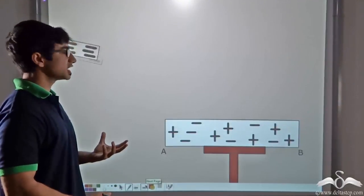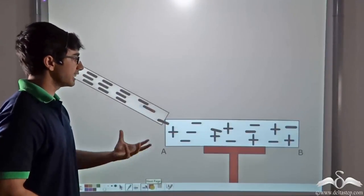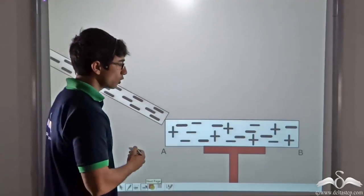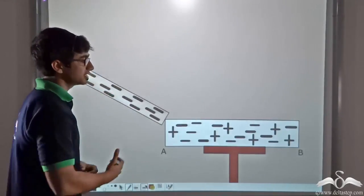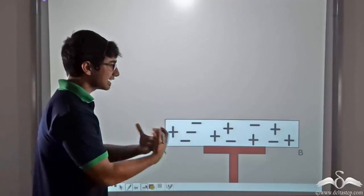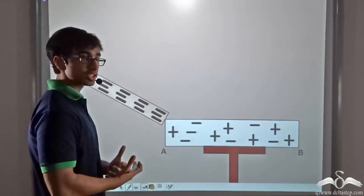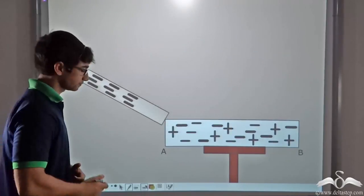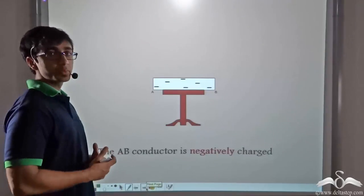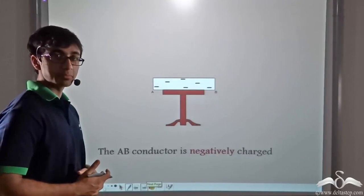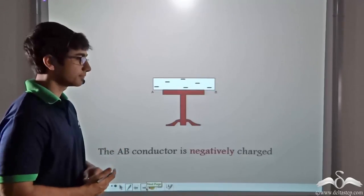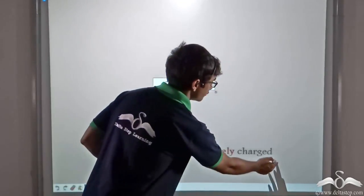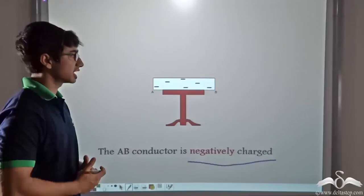When this negatively charged ebonite rod is touched with conductor AB, the excess negative charges — or electrons — flow into conductor AB. As you can see, conductor AB now has an excess of electrons, and due to this excess of electrons, conductor AB gets negatively charged. So even when the ebonite rod is removed from conductor AB, the conductor remains negatively charged. Through conduction, we have obtained a negatively charged conductor AB.